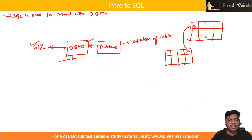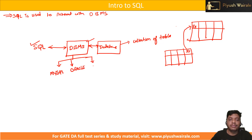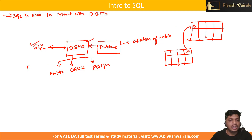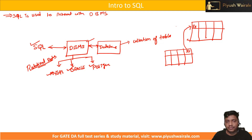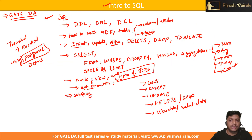We have different DBMS systems. You must have heard about MySQL. We also have Oracle, and we have PostgreSQL — very famous PostgreSQL. These are all very famous Relational Database Management Systems. They are different types of DBMS, but we are only going to focus on Relational Database Management System, and these all are relational database management systems.